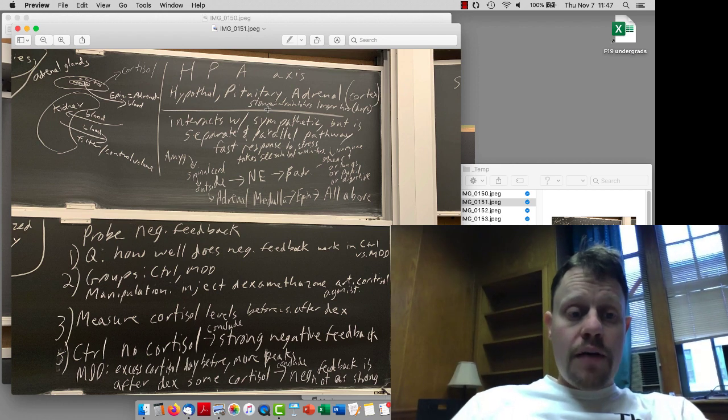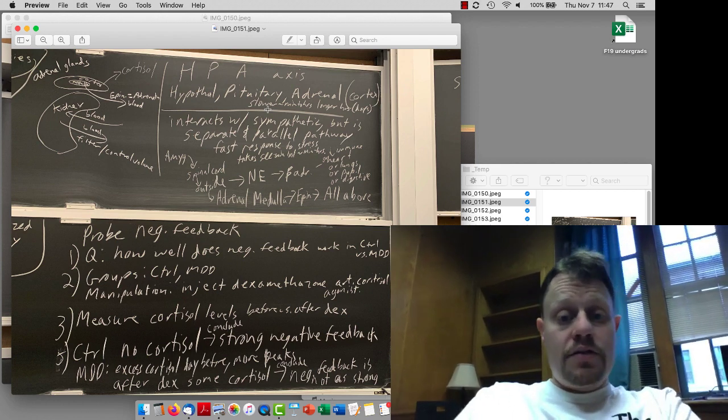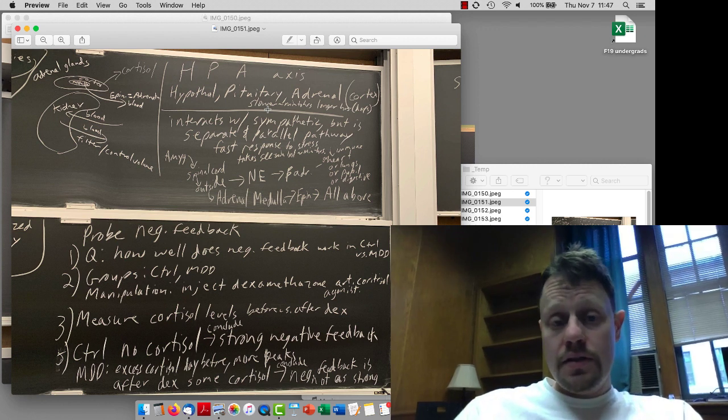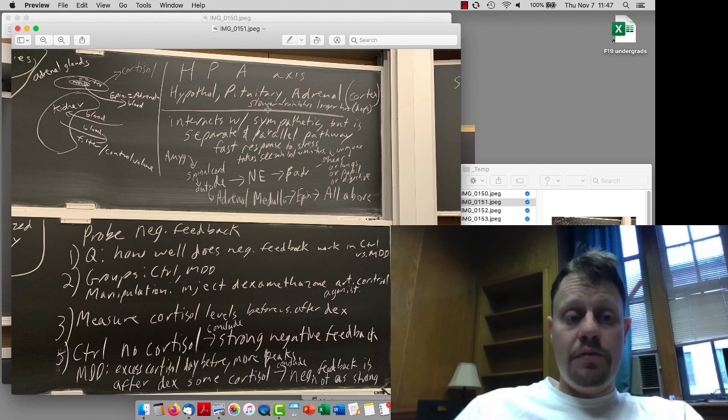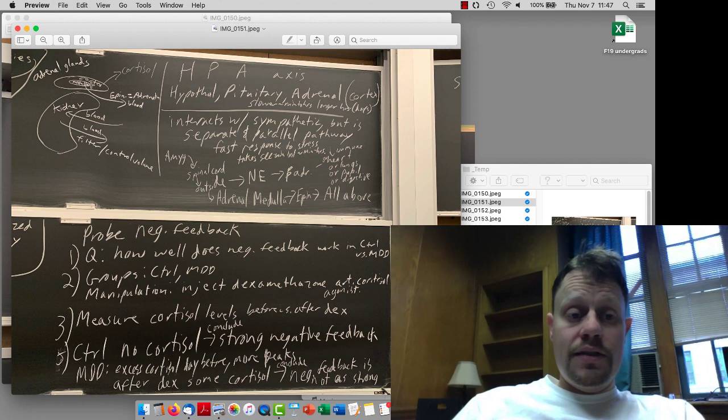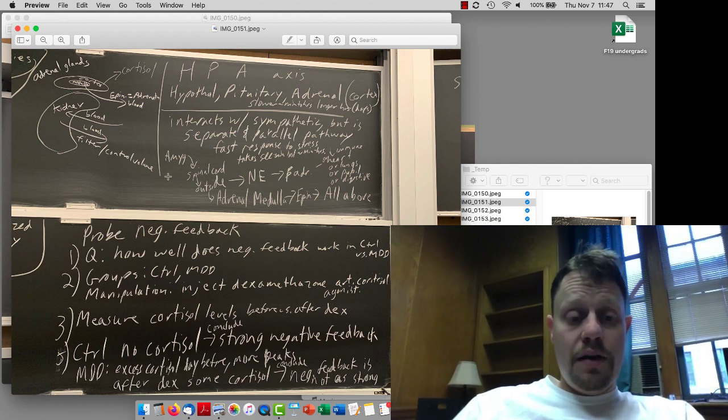So, we talked about the HPA axis and sort of the definitions of different things. It has some interactions with the sympathetic nervous system, but there is a separate and parallel pathway. Although, actually, interestingly, also part of the adrenal glands, the deep medulla of the adrenal glands is where epinephrine is released.